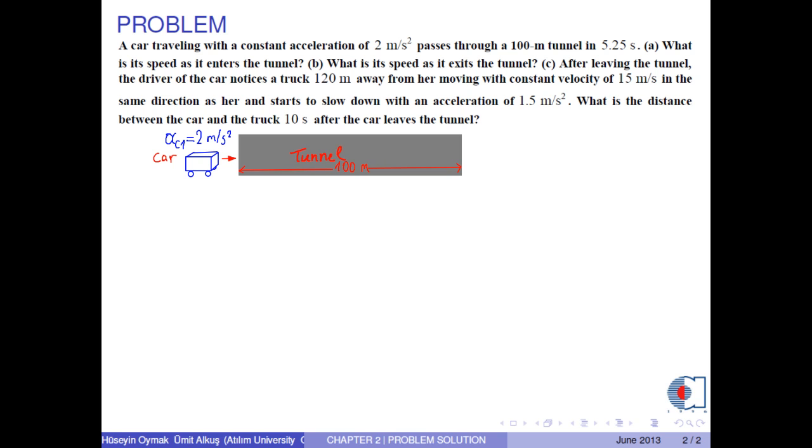A car traveling with a constant acceleration of 2 meters per second squared passes through a 100-meter tunnel in 5.25 seconds. Part A: What is its speed as it enters the tunnel? Part B: What is its speed as it exits the tunnel?